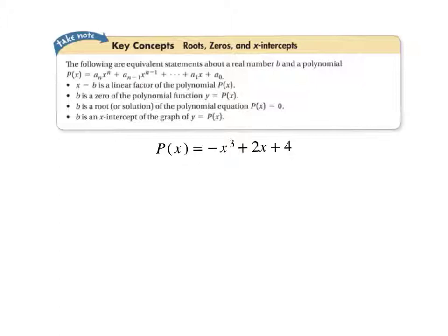So given a polynomial function, x minus b is a linear factor of the polynomial, and that would be when we see the factored form of that polynomial written out in binomials or trinomials. b is a zero of the polynomial function. b is a root or solution of the polynomial equation, where we actually take the P(x) off and substitute it with a zero. And finally, b is an x-intercept of the graph, when we think about the actual graph. And this goes back to the bridge map we made in class.